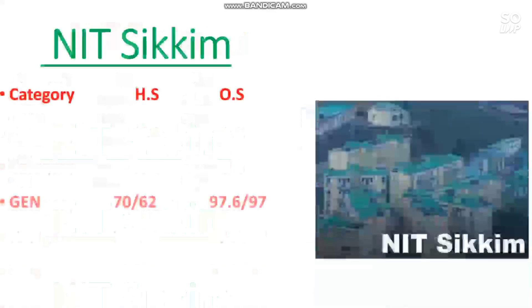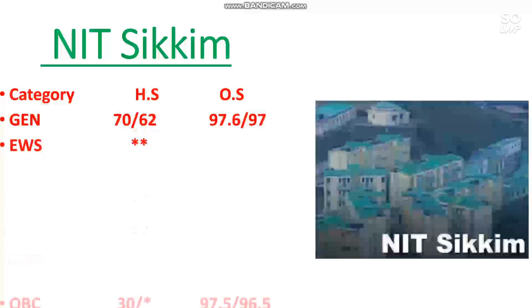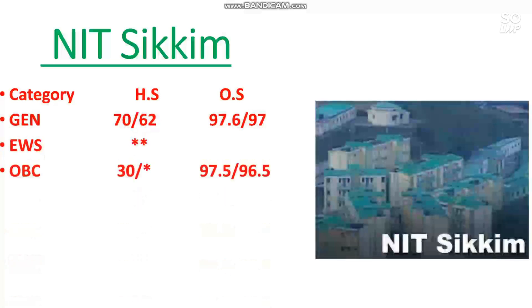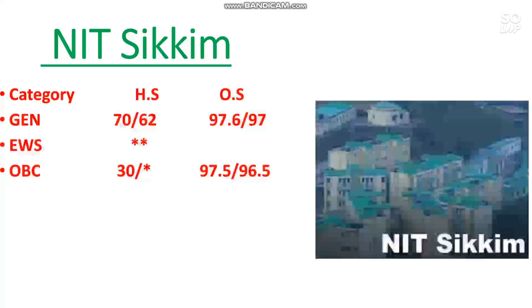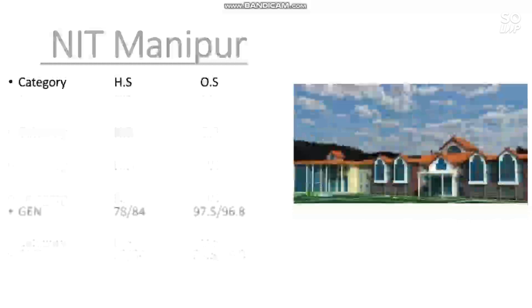The next is NIT Sikkim. The percentile required for General is 97.6 and 97. EWS has no seat. OBC requires 97.5 and 96.5 percentile. However, if you are from the home state, you can get admission at just 30 percentile — great news for home state students. For SC, 35 percentile is required, and for ST, no seat is reserved.